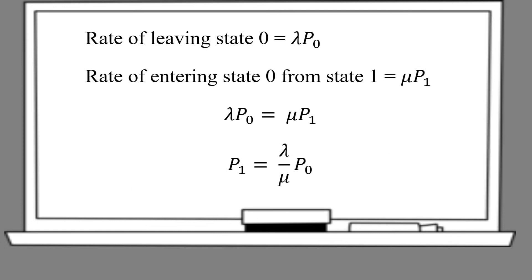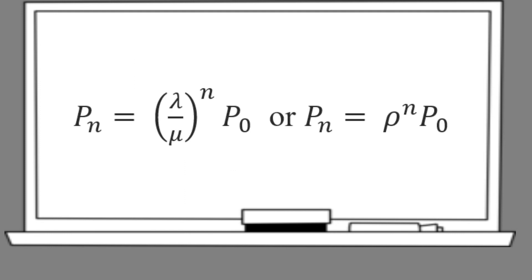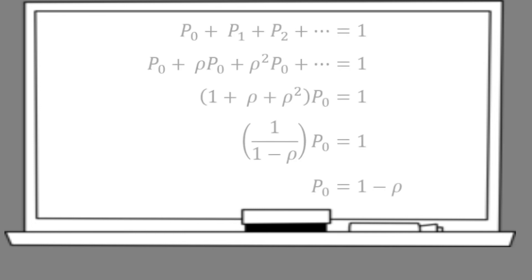At state 0, when in equilibrium, the rate of leaving equals the rate of entering, which means lambda times P_0 equals mu times P_1, then we can solve for P_1. The same goes to state 1, then we can solve for P_2. In general form, we can write P_n as (lambda over mu) to the power of n times P_0, or substitute lambda over mu with rho. We know that the sum of probabilities is 1, so P_0 plus P_1 plus P_2 and so on equals 1. Substitute P_1, P_2, and so on into the equation and solve for P_0.